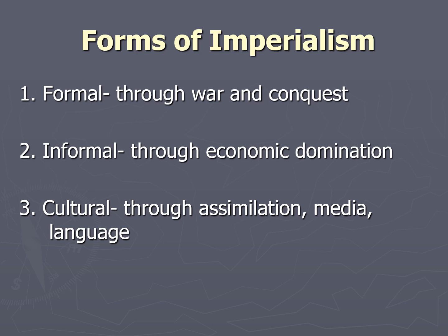Number two, informal imperialism is through economic domination. Example: my people meet your people, we see that you have diamond mines, we lease you the mining equipment, we pay you to mine it, we keep the diamonds and sell them at a large profit, and force you to sign a treaty prohibiting any other people from mining your diamonds. We now have a monopoly on your diamonds.